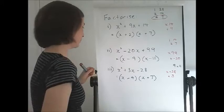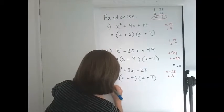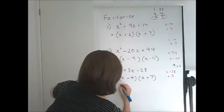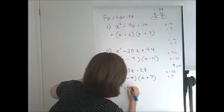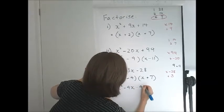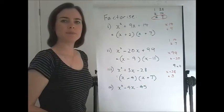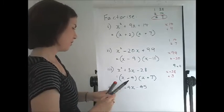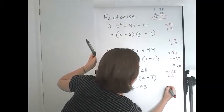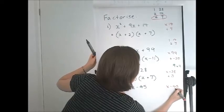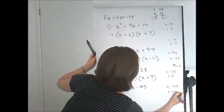Now we'll do one more. Factorise x squared take 4x take 45.